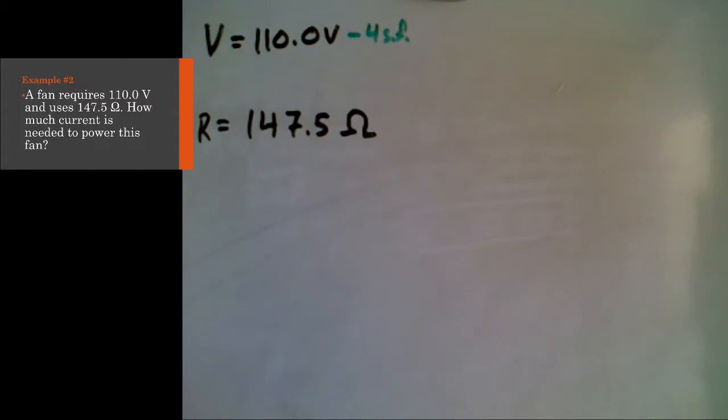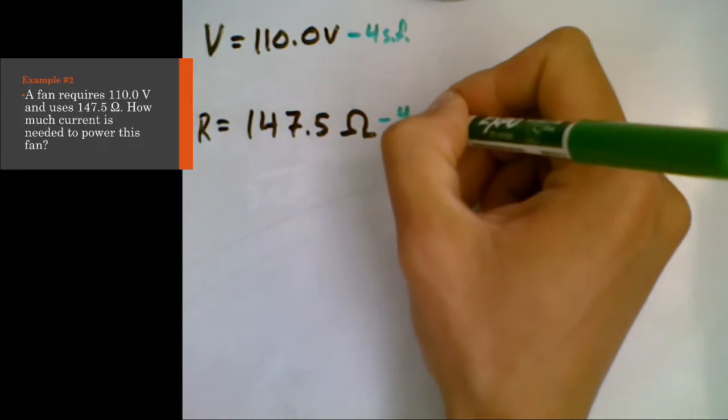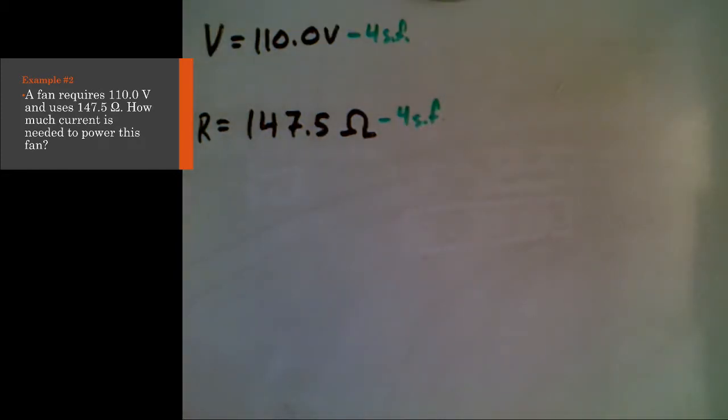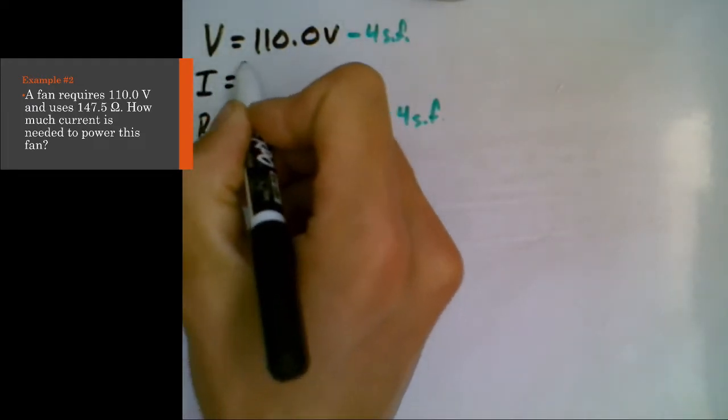Resistance, we know is 147.5 ohms. And again, read the question carefully. You can see the unit gives away what value we're actually dealing with. And again, you have four significant figures. The question really here is what is the current?